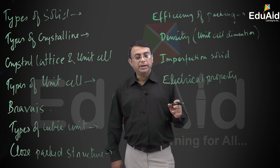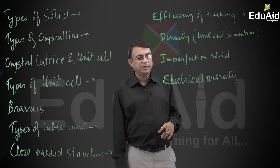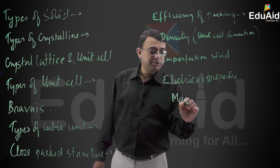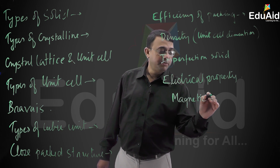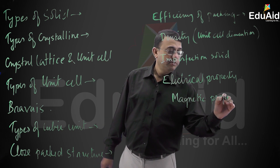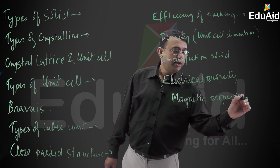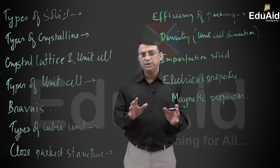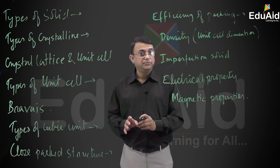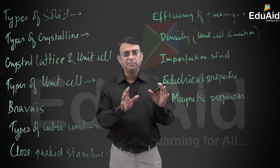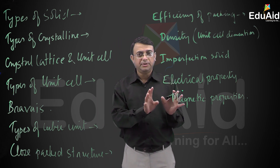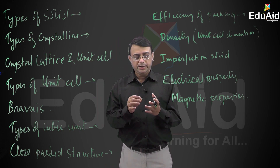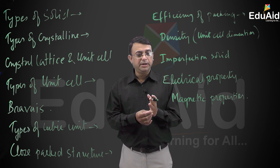Finally, we have discussed something about the magnetic properties of substances. Magnetic properties are commonly discussed in physics. For substances, we have covered paramagnetic, diamagnetic, ferromagnetic, anti-ferromagnetic, and ferrimagnetic properties.